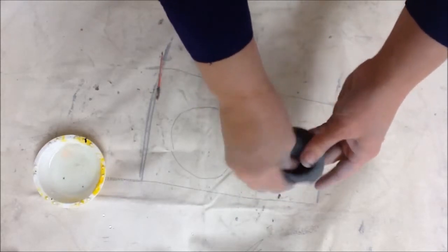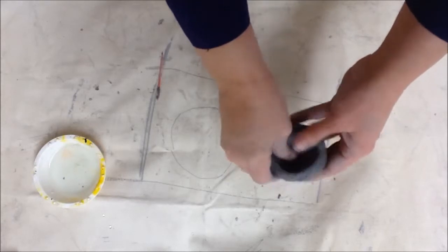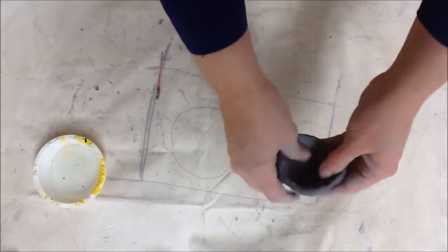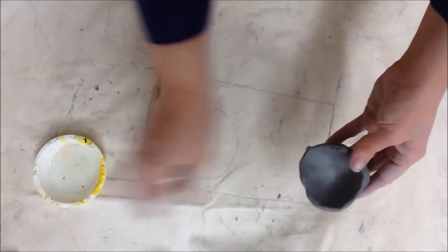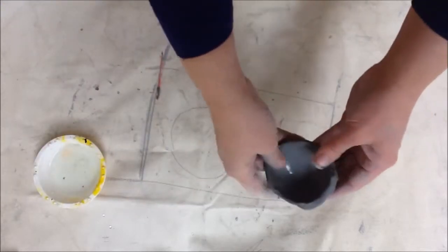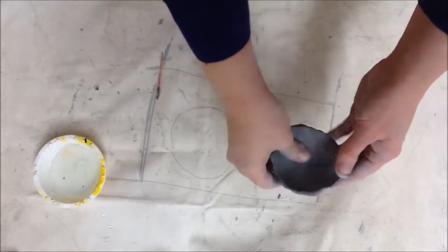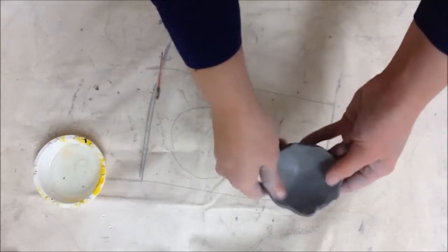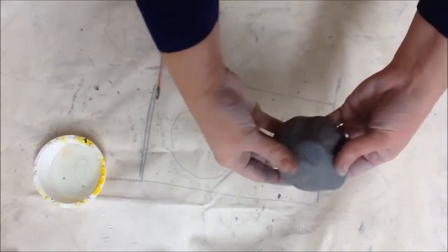We have to remember we don't want this to be more of a cup so much as we want it to be a shell for our turtle. So you want to be able to smooth out. I use a little bit of water on my thumb to pull and work this out so that gets more of a turtle shell shape to it.